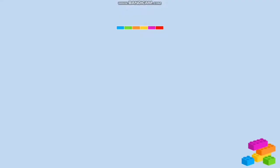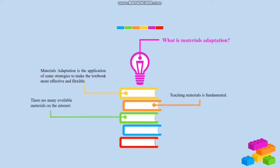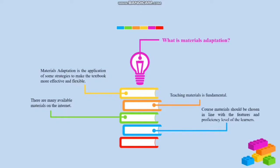Let's begin with materials adaptation. What is materials adaptation? It can be defined as the application of some strategies to make the textbook more effective and flexible. Most English teaching programs focus on teaching materials as a fundamental part. Although there are many available materials on the internet, most teachers spend a lot of time producing their own materials because they need to be chosen in line with student features and proficiency level.